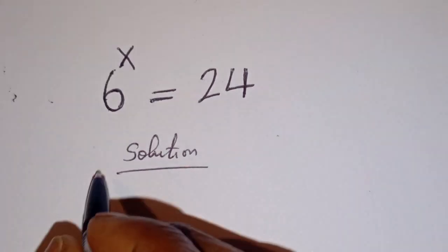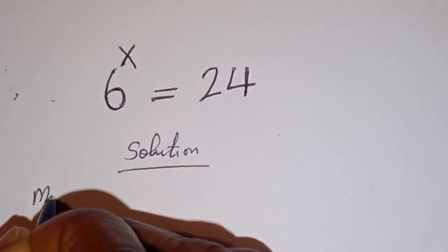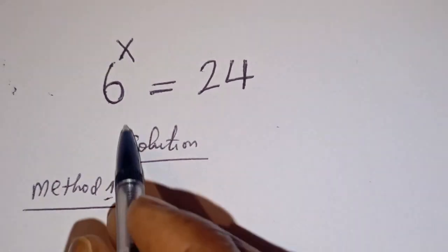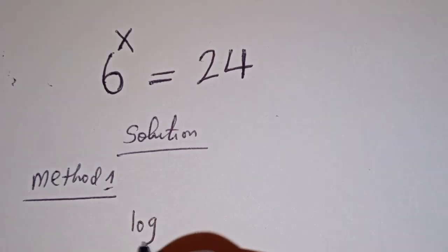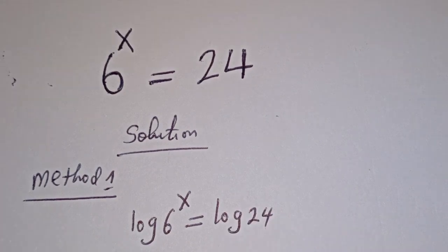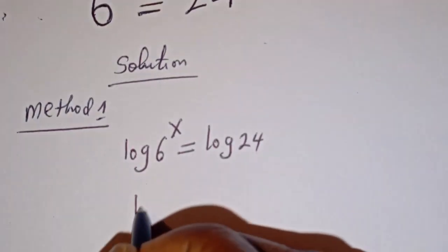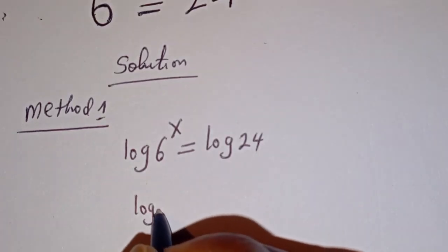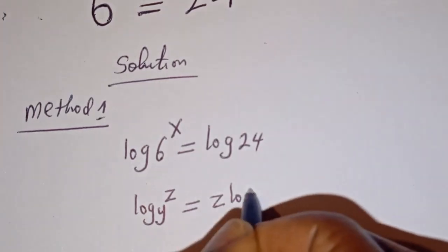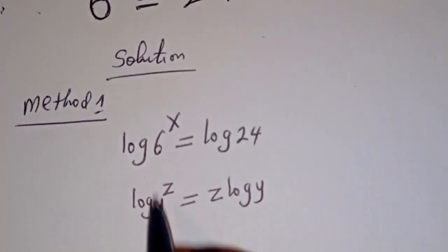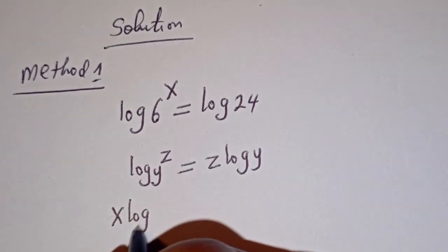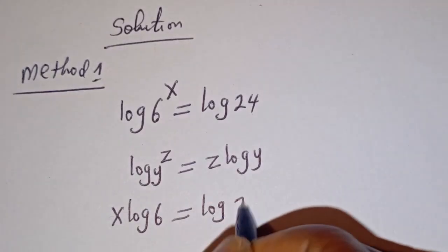Let's take the log of both sides. We are going to solve this in two ways — let's call this Method 1. If we take the log of both sides, we have log 6 to the power of x is equal to log 24. Now, if you have log y to the power of z, this is equal to z log y. Then this can be written as x log 6 is equal to log 24.